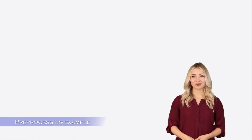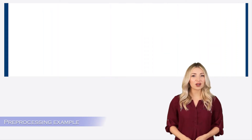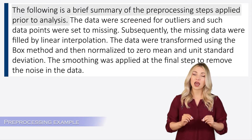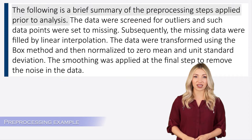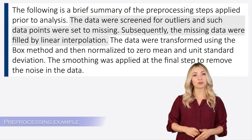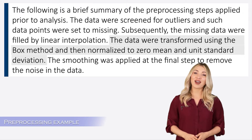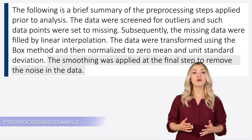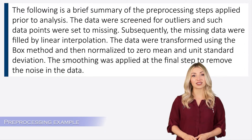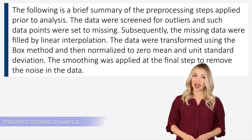Let's look at some examples. Here is an example from an engineering research paper where the authors talk about pre-processing. The authors performed a series of steps before conducting the actual analysis. They filled in the missing data using linear interpolation, and then they transformed and normalized the data. Finally, they applied data smoothing to remove any noise. The authors are very transparent and are detailing everything they did to the data before the actual analysis.